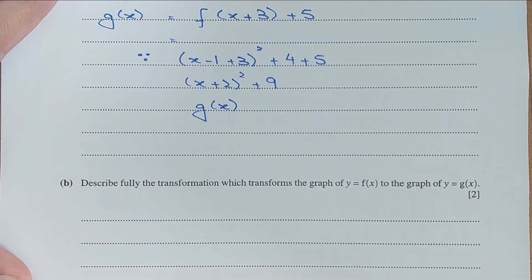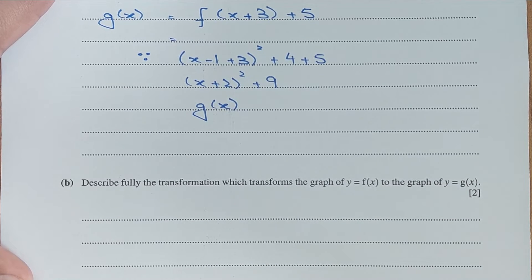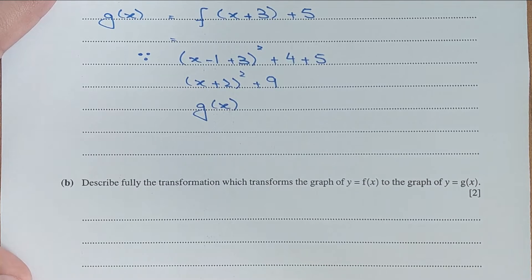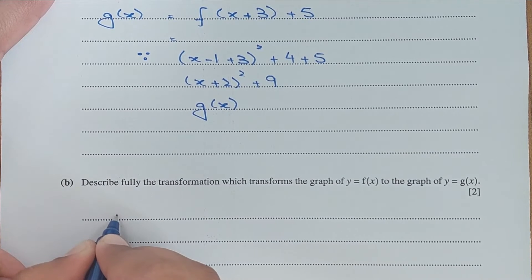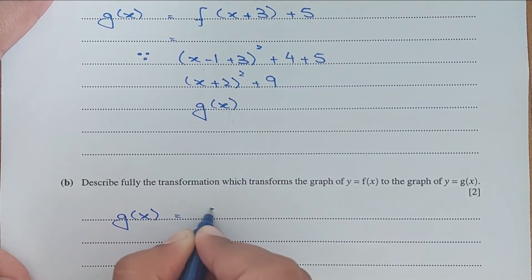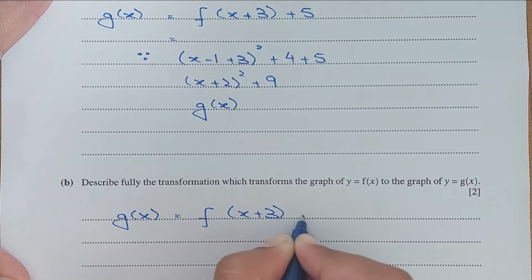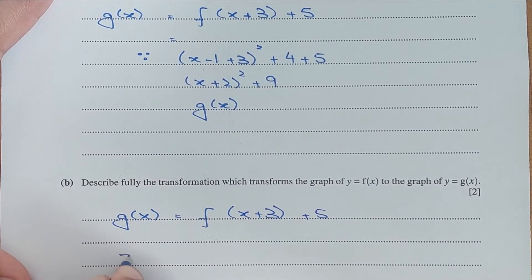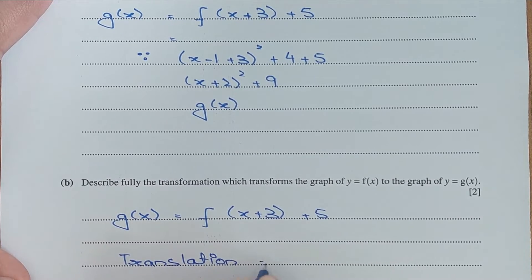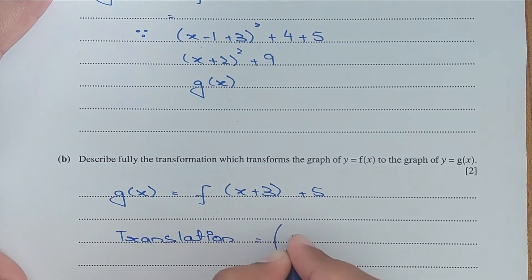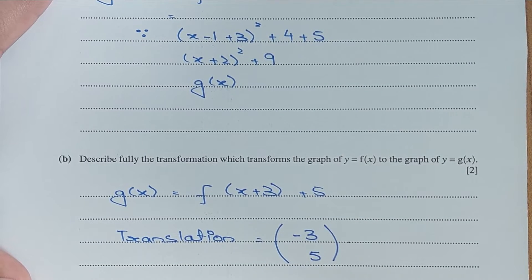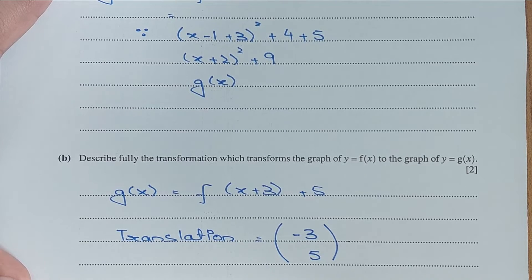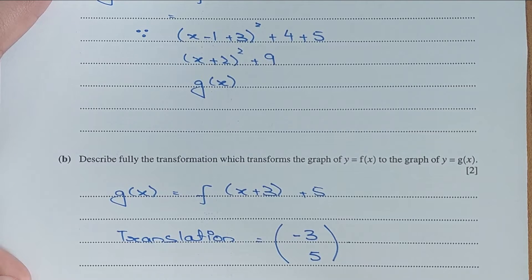For part b, describe the transformation from y equals f(x) to y equals g(x). Since g(x) equals f(x + 3) + 5, this is a translation of 3 units to the left and 5 units up.